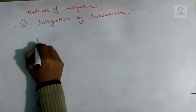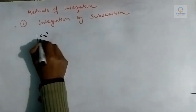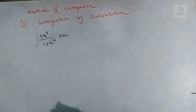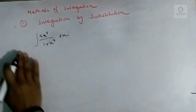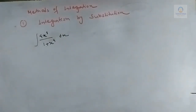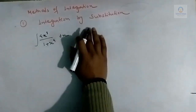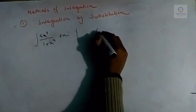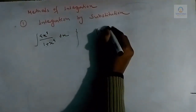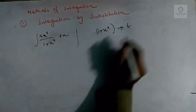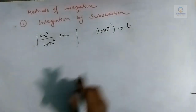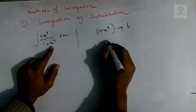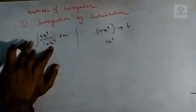Let us take one more example. Suppose we have the integral of 4x³/(1 + x⁴) dx. Integrating this directly would be lengthy, so let us use integration by substitution. We put t = 1 + x⁴. If we differentiate x⁴, we get 4x³, since 1 is a constant.